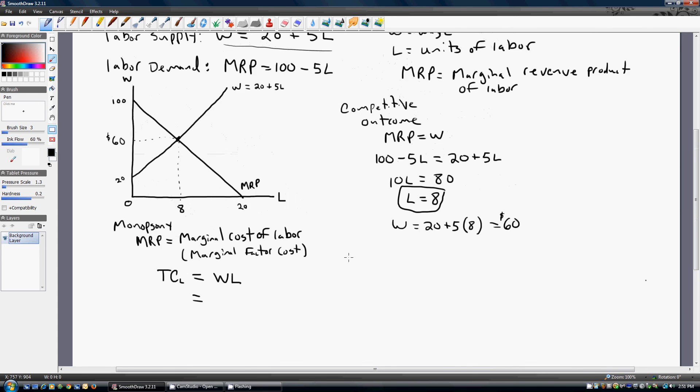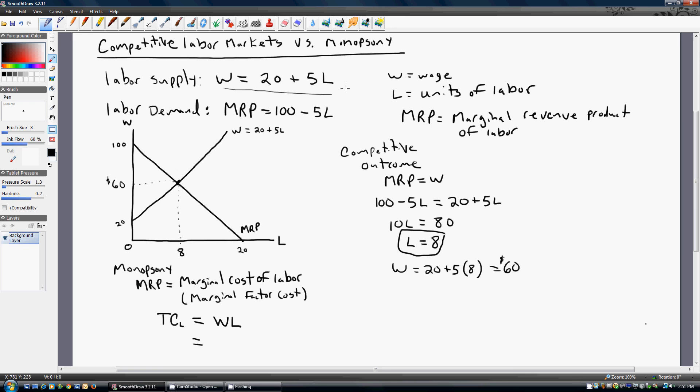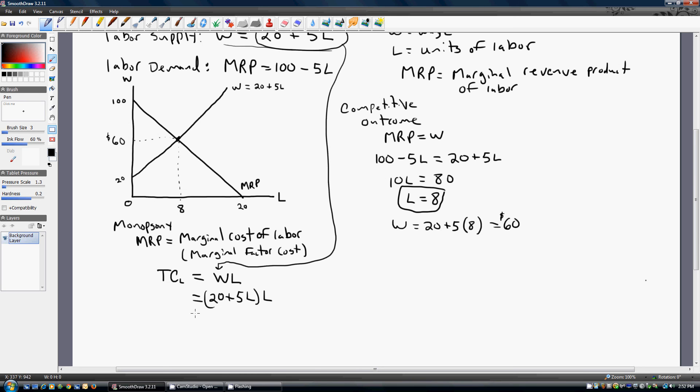Well, what is the wage? It's 20 plus 5L, so I'm going to take that 20 plus 5L and plug it into the firm's total cost of labor function. And now I'm just going to simplify this a little bit. So 20L plus 5L squared.